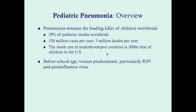Before school age, viruses predominate, particularly the RSV virus — respiratory syncytial virus — and the parainfluenza virus. RSV keeps popping up as a problematic virus for young children. It is the cause of the majority of cases of bronchiolitis. It can cause acute bronchitis and is indeed one of the leading causes of pneumonia in small children.